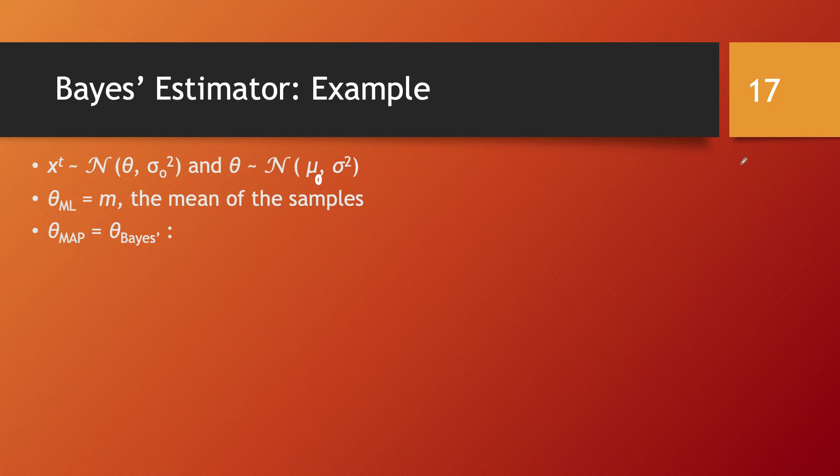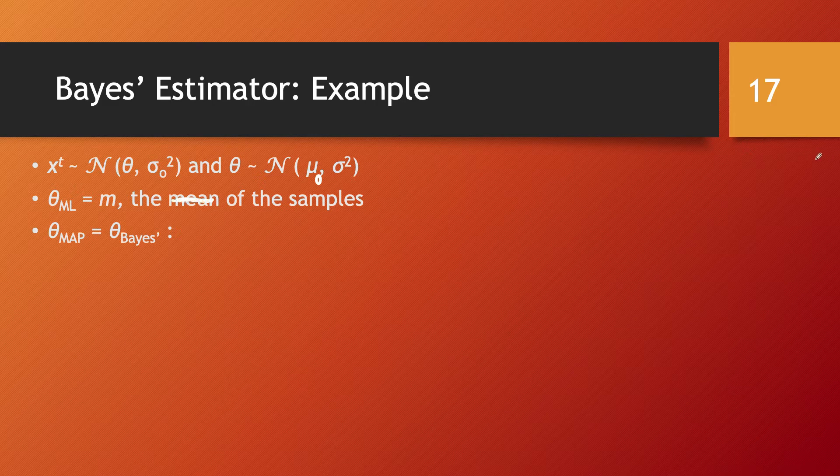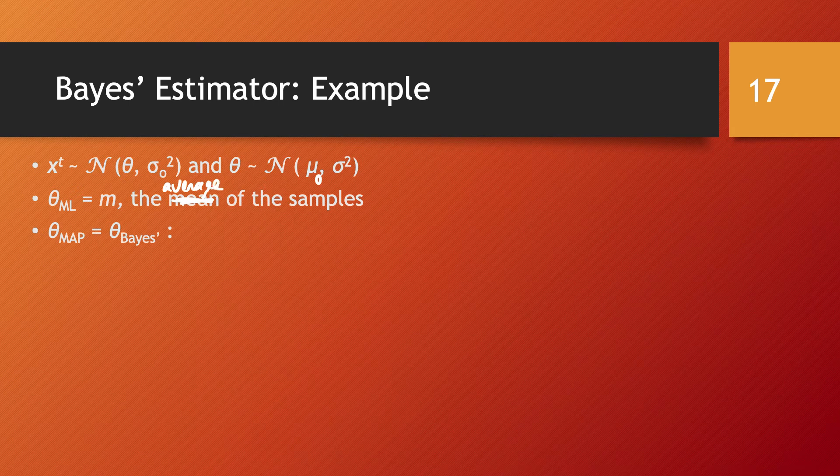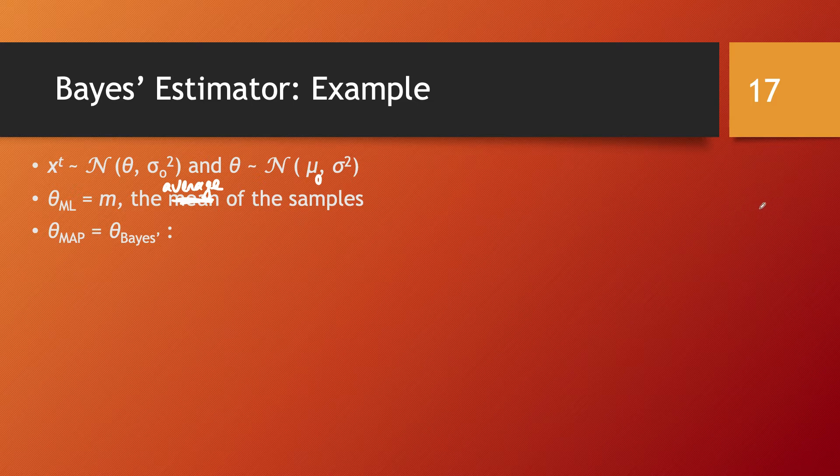In the case of the maximum likelihood estimator, the idea was, as we have seen in a previous video, that you can choose as an estimation of the mean simply the average of the samples. And as a matter of fact, now when I'm going to open up this maximum a posteriori and Bayes, you will see that in fact in this case they coincide, but this will become clear in just a moment.